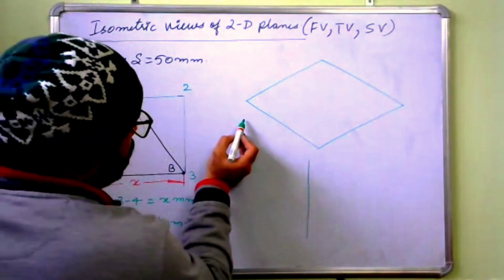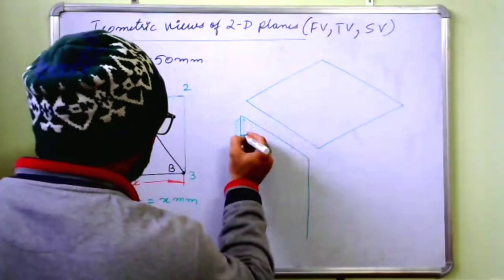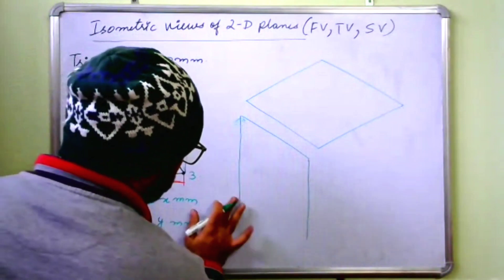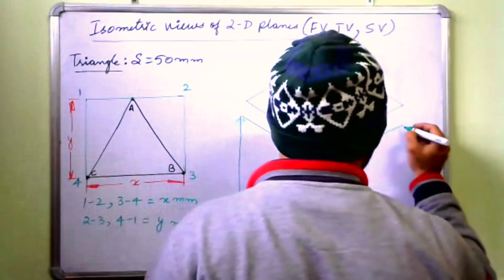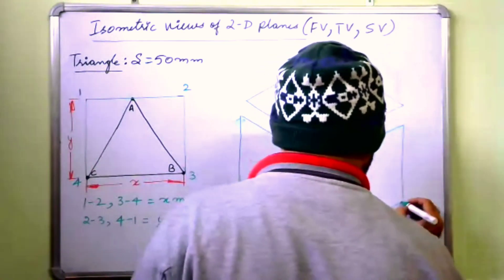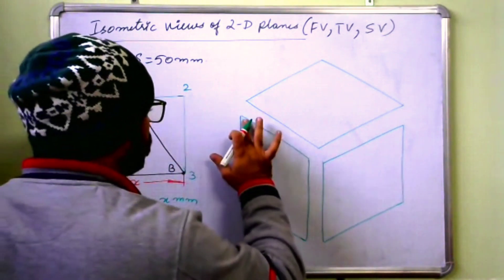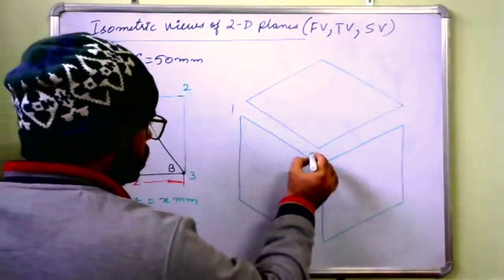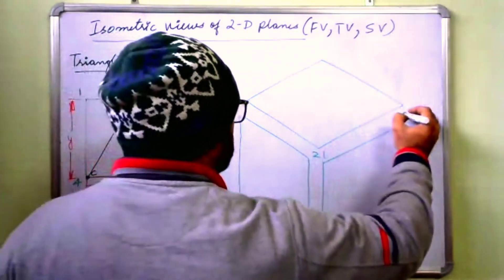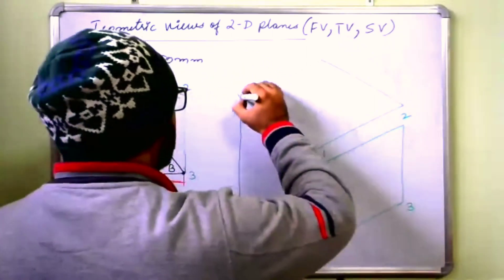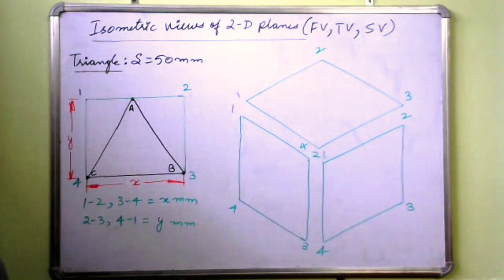The lengths will be different. Opposite lengths will be same. So like this it will be. Here, let us say this is 1, this is 2, this is 3 and this is 4. Let us say this is 1, this is 2, 3 and 4, 1, 2, 3 and 4.